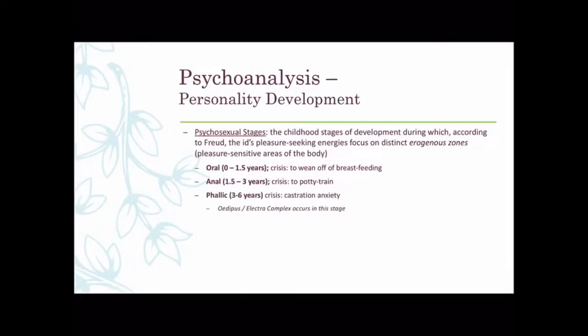In the phallic stage, pleasure is centered on the genital area, and the crisis is castration anxiety. This comes down to the Oedipus and Electra complexes. The Oedipus complex is for boys and the Electra complex is for girls — they're a lot alike, but with some differences.